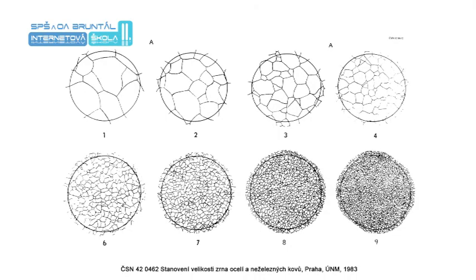Grain size determination by comparison method uses the ČSN standard in our republic. Grain size in the evaluated sample is determined by comparison with reference images of structures with defined grain size at typically 100x magnification and the number of grains per square millimeter is determined.